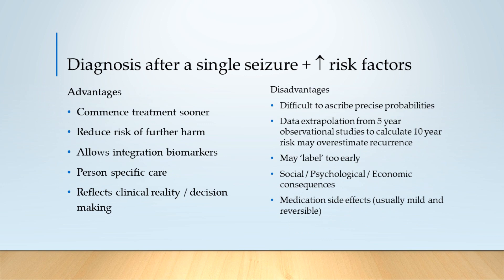The other major group of points of debate focuses around people who have a single seizure but have increased factors for having further seizures in the future. There are a number of advantages to being able to do this. One is able to commence treatment sooner, which can reduce the risk of further harm. It allows integration of biomarkers — so if we have an imaging result showing a tumour, for example, which will have a high risk of generating further seizures, that's really useful information to put into our model. A person who has had a single seizure in the context of a particular brain tumour would be at risk of further seizures and would benefit from being on treatment sooner.